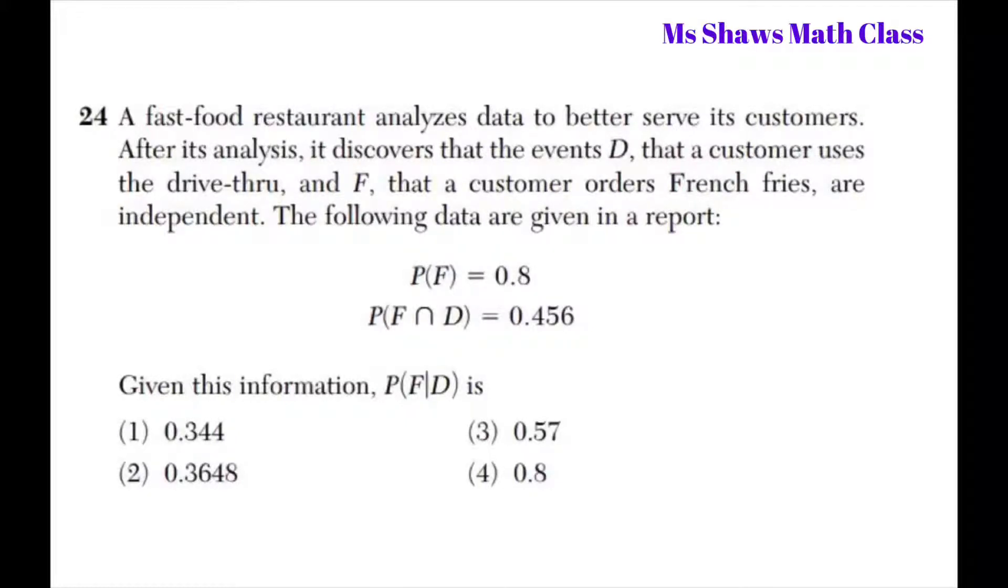After its analysis, it discovers that the events D, that a customer uses the drive-thru, and F, that a customer orders french fries, are independent. So this is the keyword: independent.